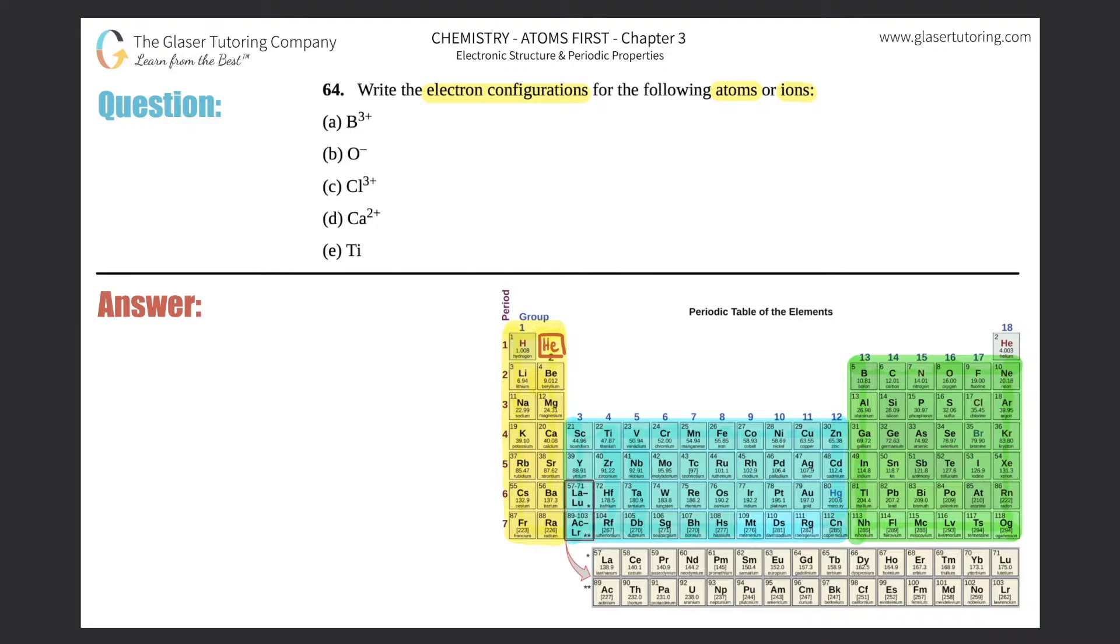Let's first group the periodic table if you haven't done so already. These two groups are where your electrons in the s subshell are, these six groups are where your p subshell electrons are, these ten groups are where your electrons in the d subshell are, and these two groups down here are where the electrons in the f subshell are located.